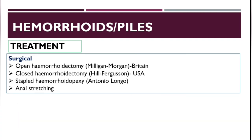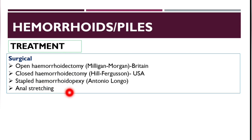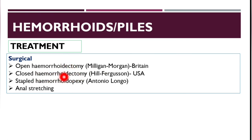Surgical treatment includes open hemorrhoidectomy, closed hemorrhoidectomy, stapled hemorrhoidopexy, and anal stretching. Open hemorrhoidectomy is commonly used in Britain, while closed hemorrhoidectomy is more commonly used in the United States.